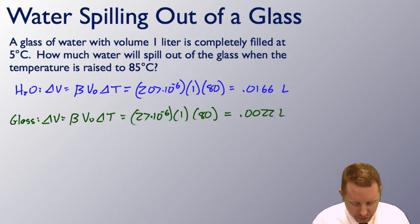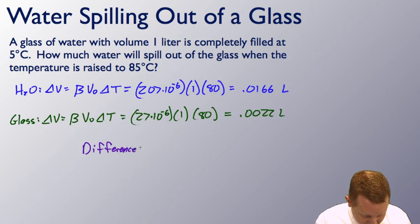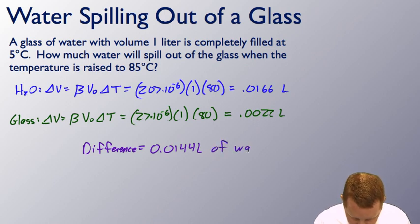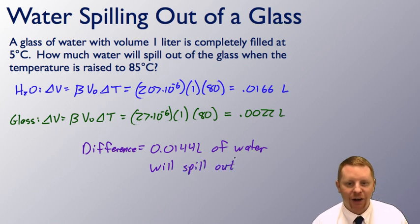If I want to know what the amount of water that spills out is, I take the difference of those two. The difference, which is just going to be 0.0166 liters minus 0.0022 liters, comes out to be about 0.0144 liters of water will spill out.